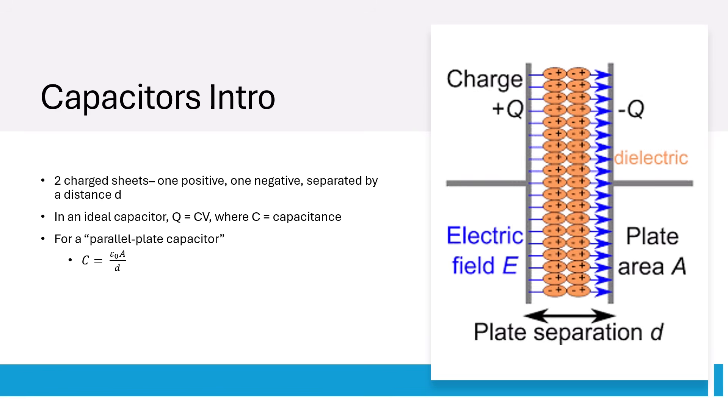For a parallel plate capacitor like the one shown to the right, capacitance is proportional to the sheet area divided by how spaced out they are. The material between the sheets matters too though. If a capacitor is filled with a dielectric, a constant is added to the equation.